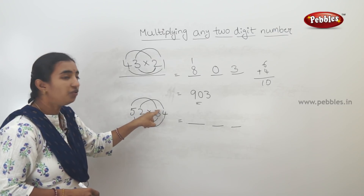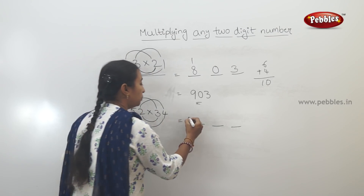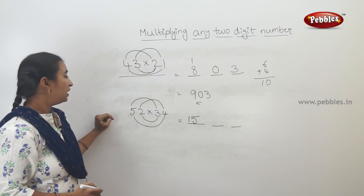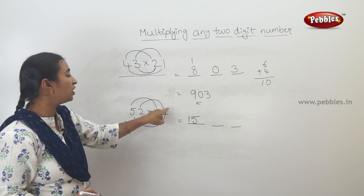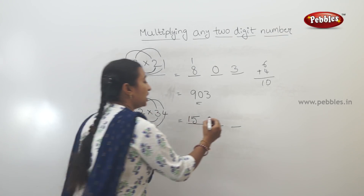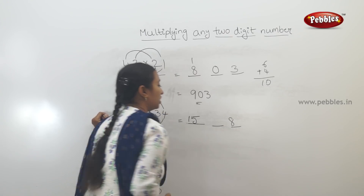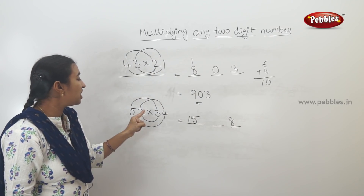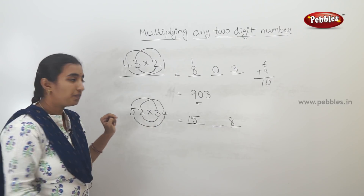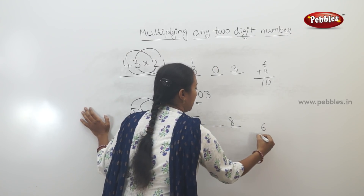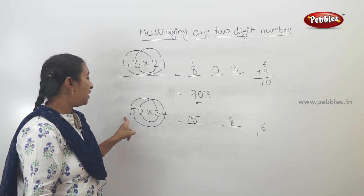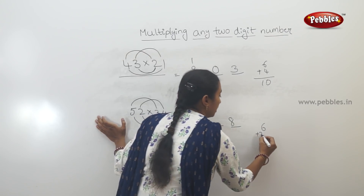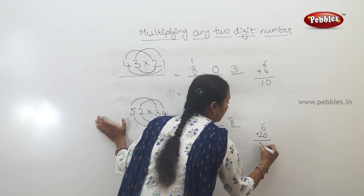First: 5 times 3 is 15. Next: 2 times 4 is 8. Then: 5 times 4 is 20, plus 2 times 3 is 6. So 20 plus 6 is 26.